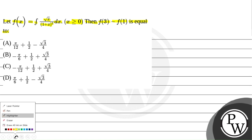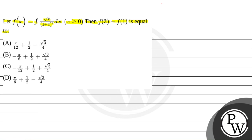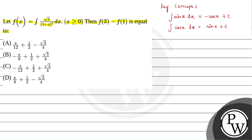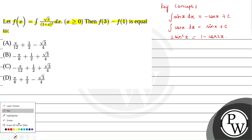Now for finding the answer, let us write the key concept. The key concepts are: integral of sin x dx equals minus cos x plus c, integral of cos x dx equals sin x plus c, and 2 sin squared x equals 1 minus cos 2x. Now let us use the key concept and solve the problem.